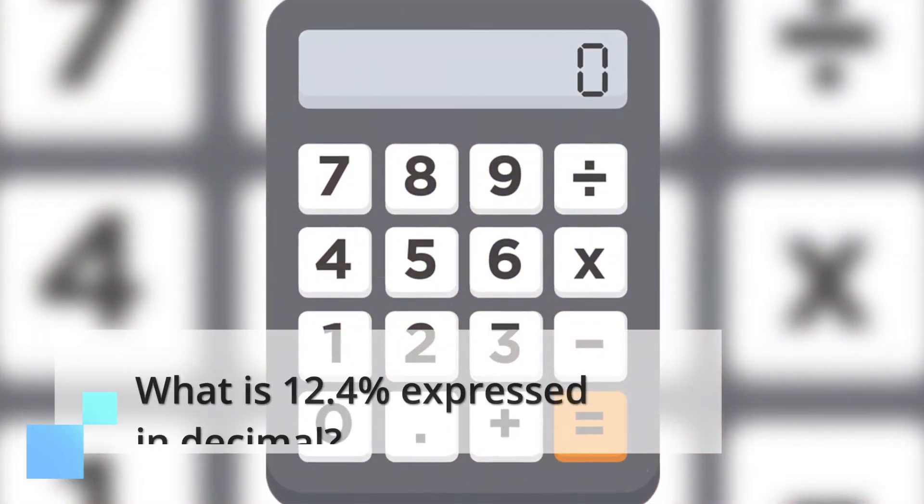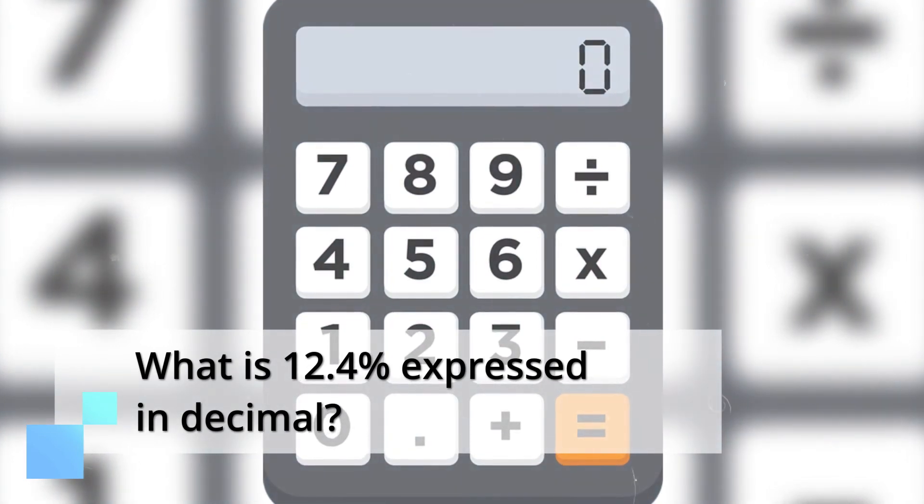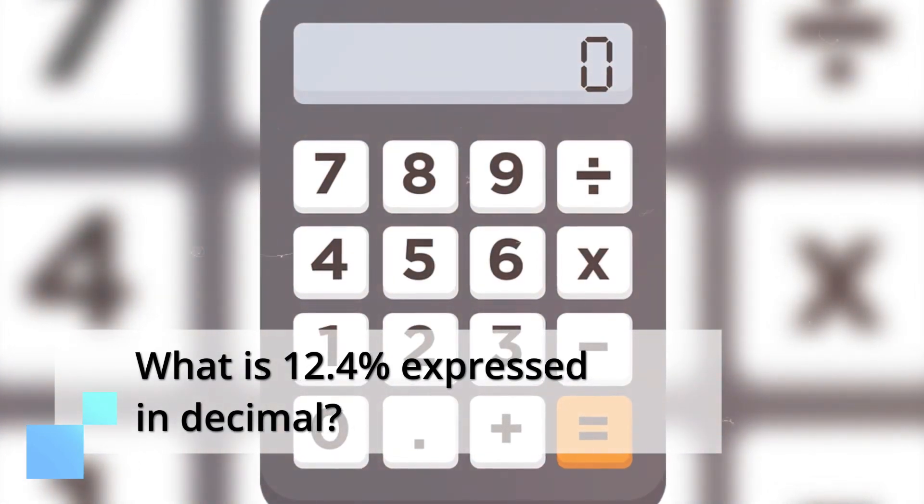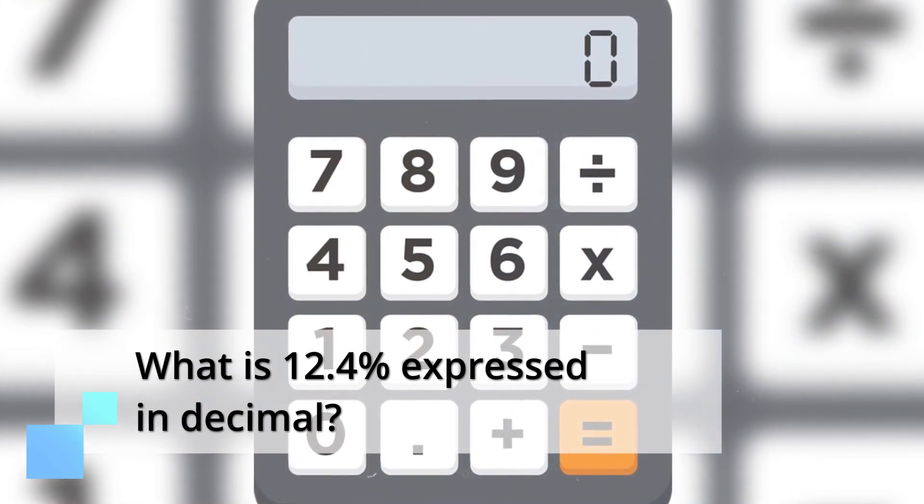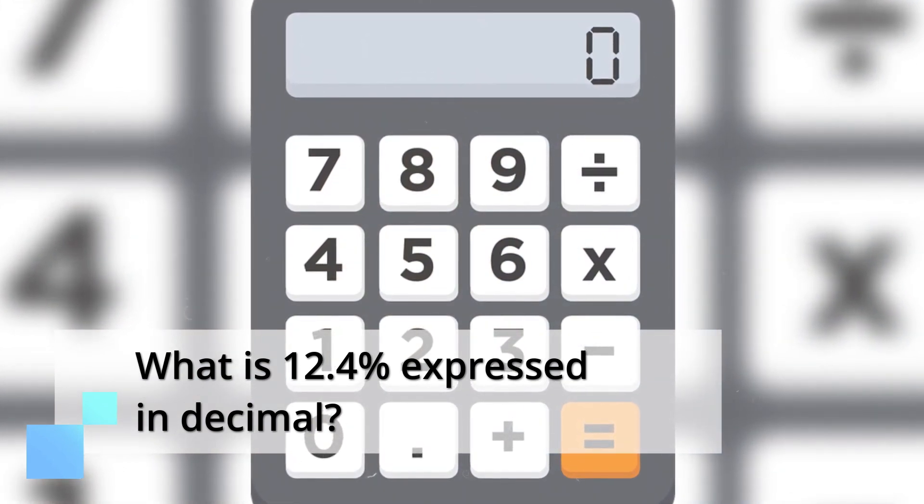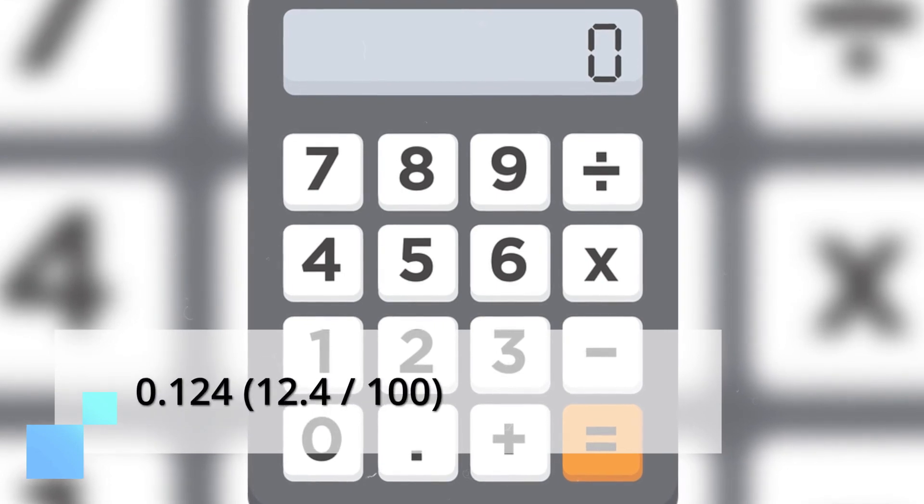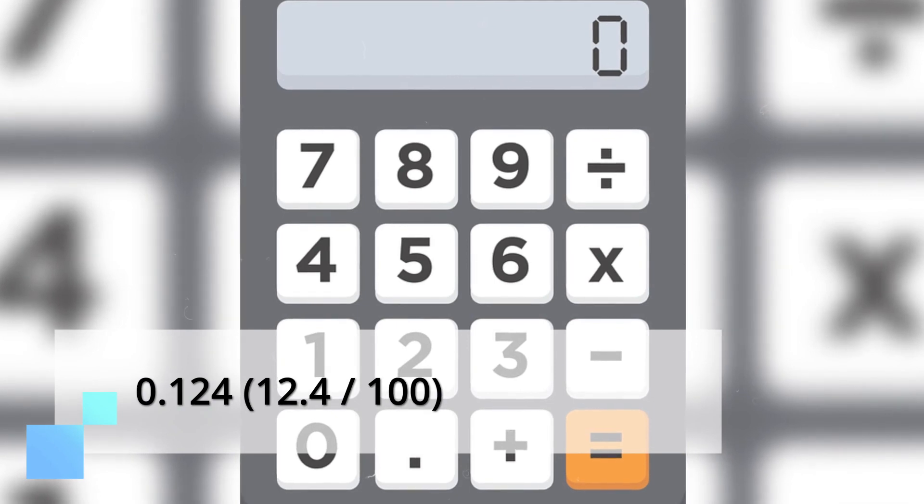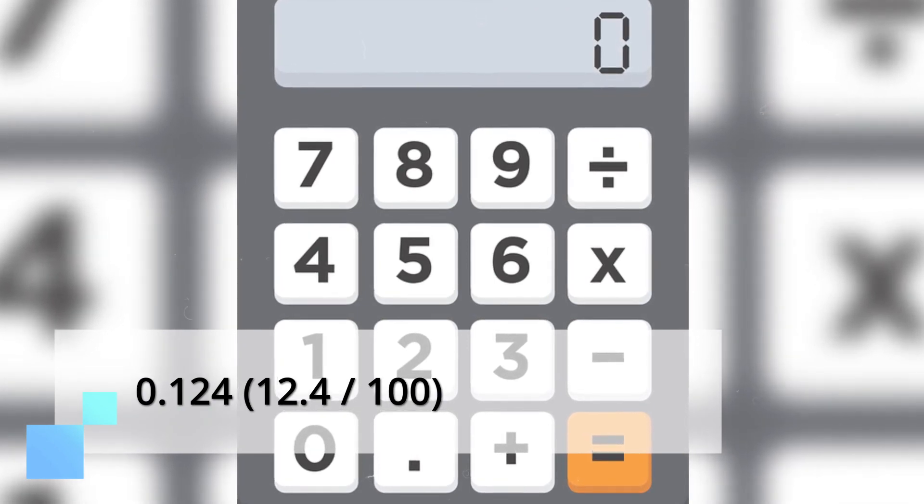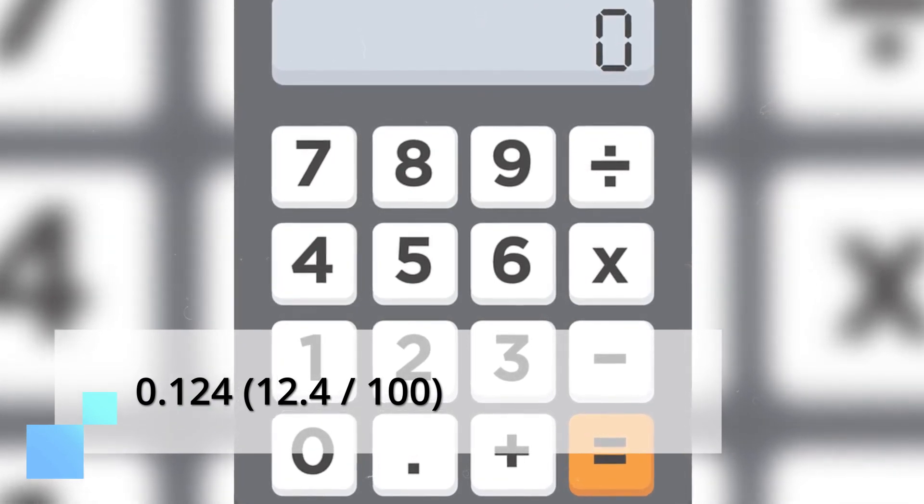Next example. What is 12.4% expressed in decimal? That's right. 0.124. We get this because it's 12.4 divided by 100 in order to get that decimal. 0.124.